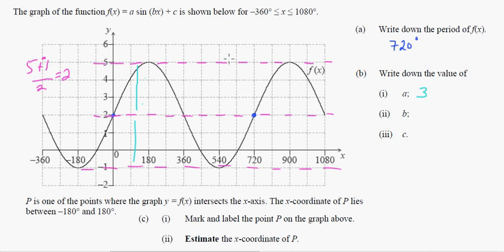Write down the value of B. The period takes 720 degrees. So we can just do, just like we did on the last problem, 360 divided by 720, which is 1/2. So that's going to be your B right there. So again, you just divide by 360.